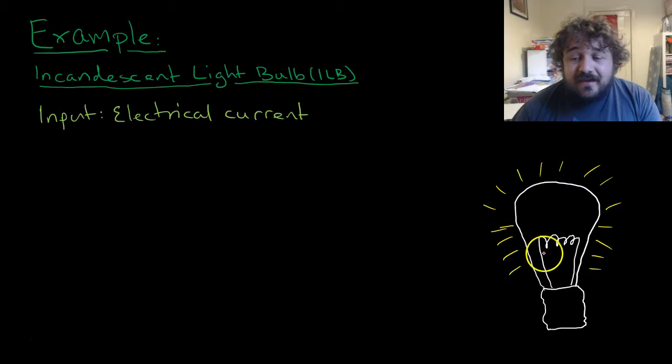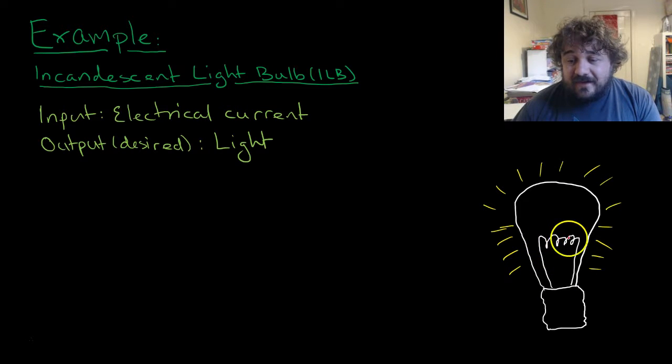Then when it gets there, ideally, the electrical current will transform when it hits resistance into light. So the output desired is light.